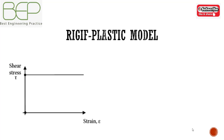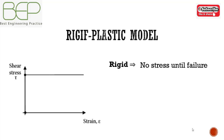Since the soil is modeled as rigid, no strain is needed to occur before failure is reached. A rigid plastic model requires only a definition of the shear strength under two-dimensional conditions.